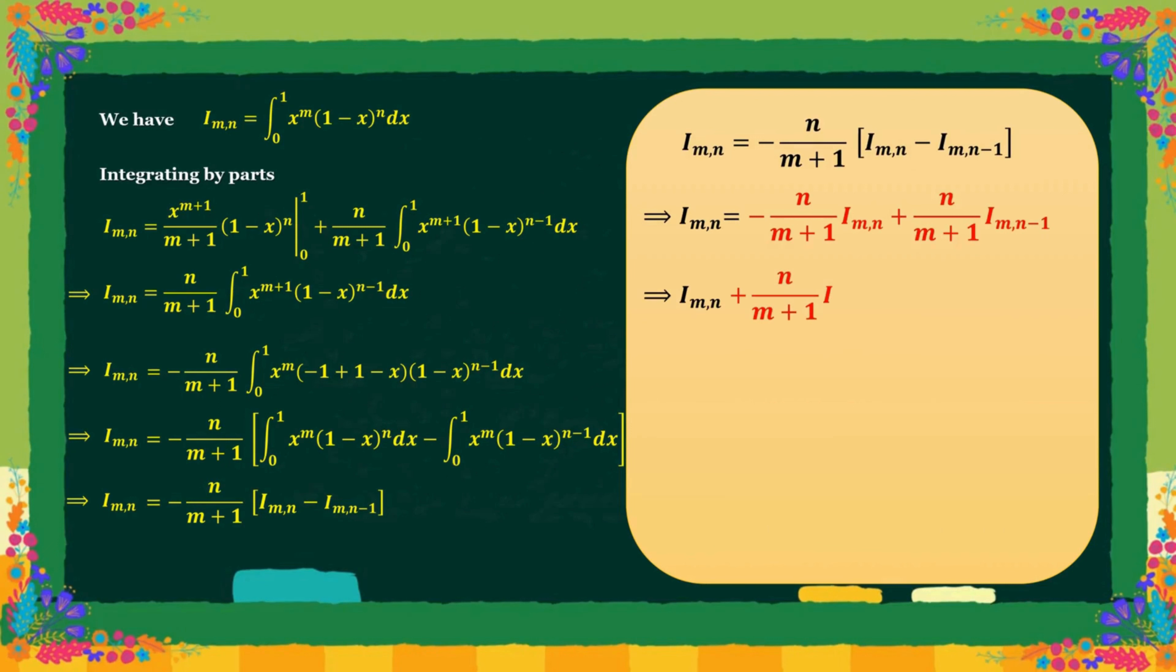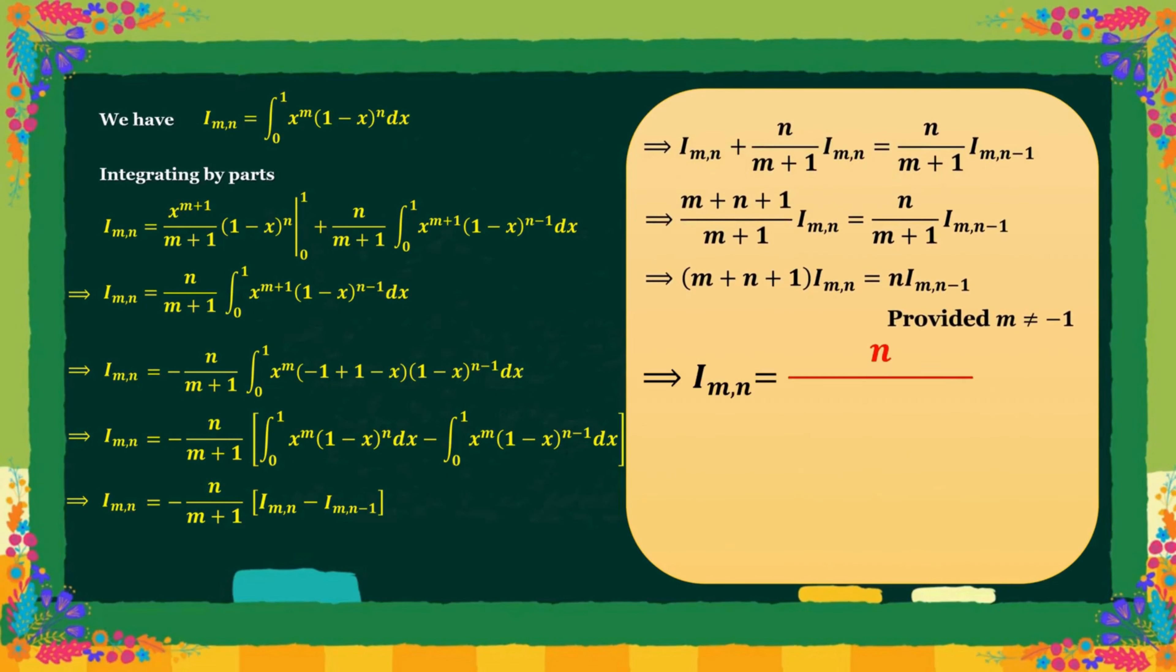Since I m n is on both sides, we shift all the I m n to the left hand side. And simplifying, we get the final result.